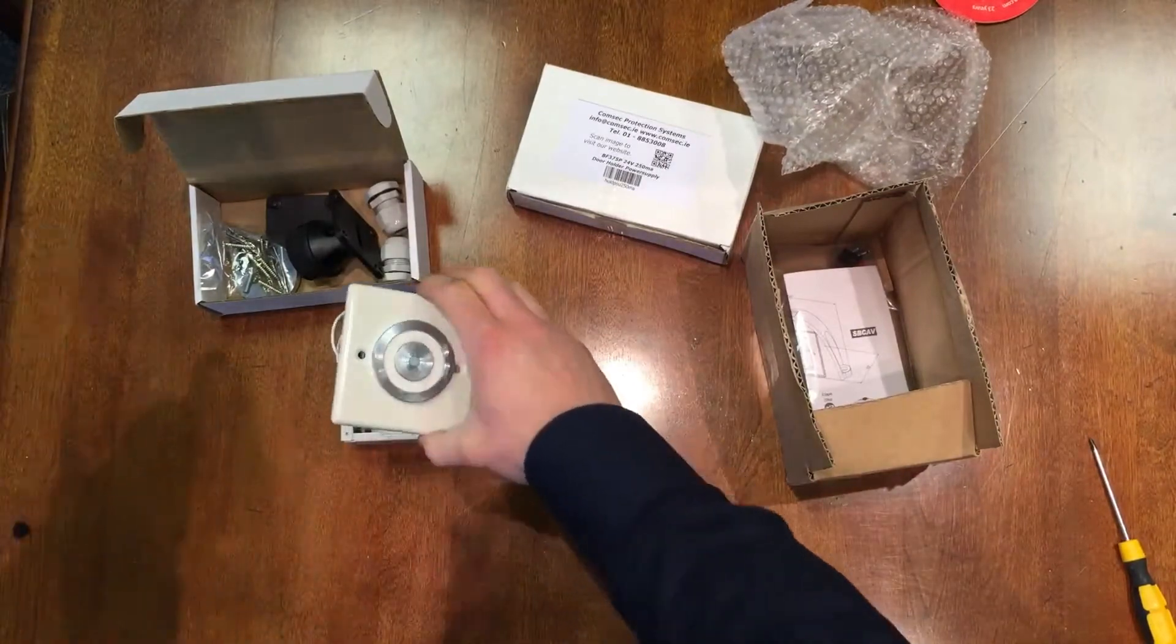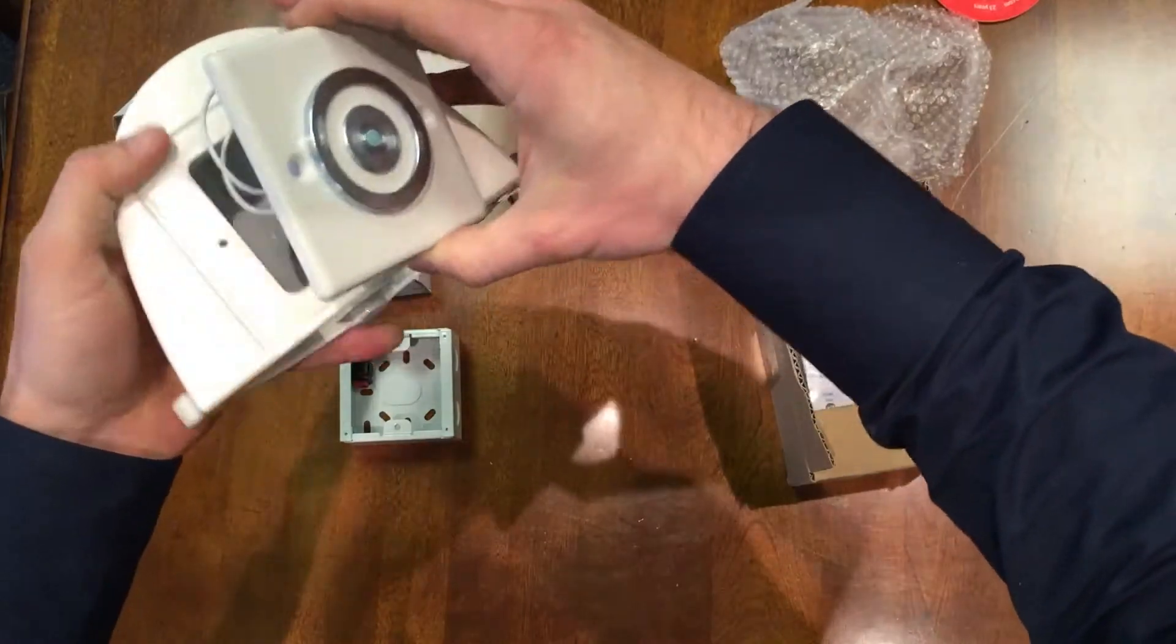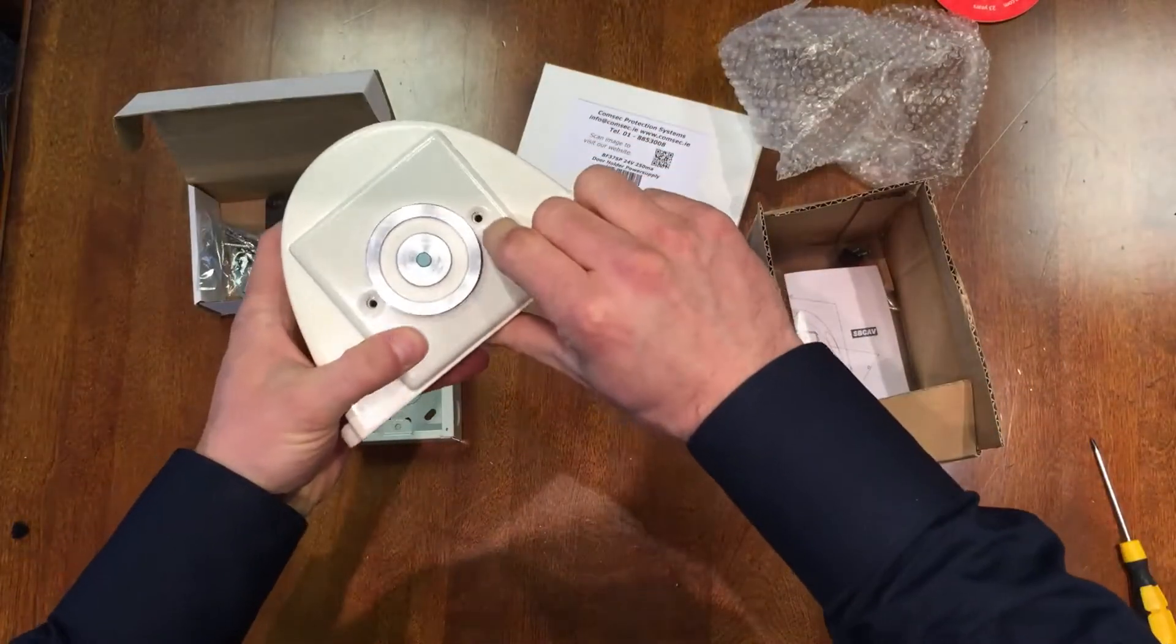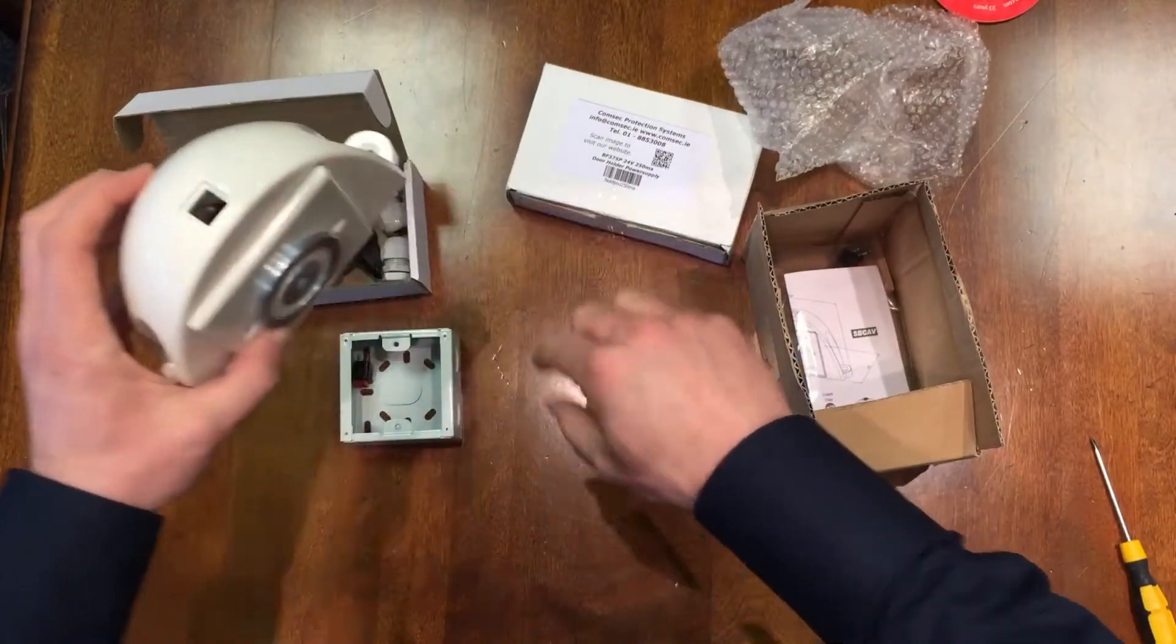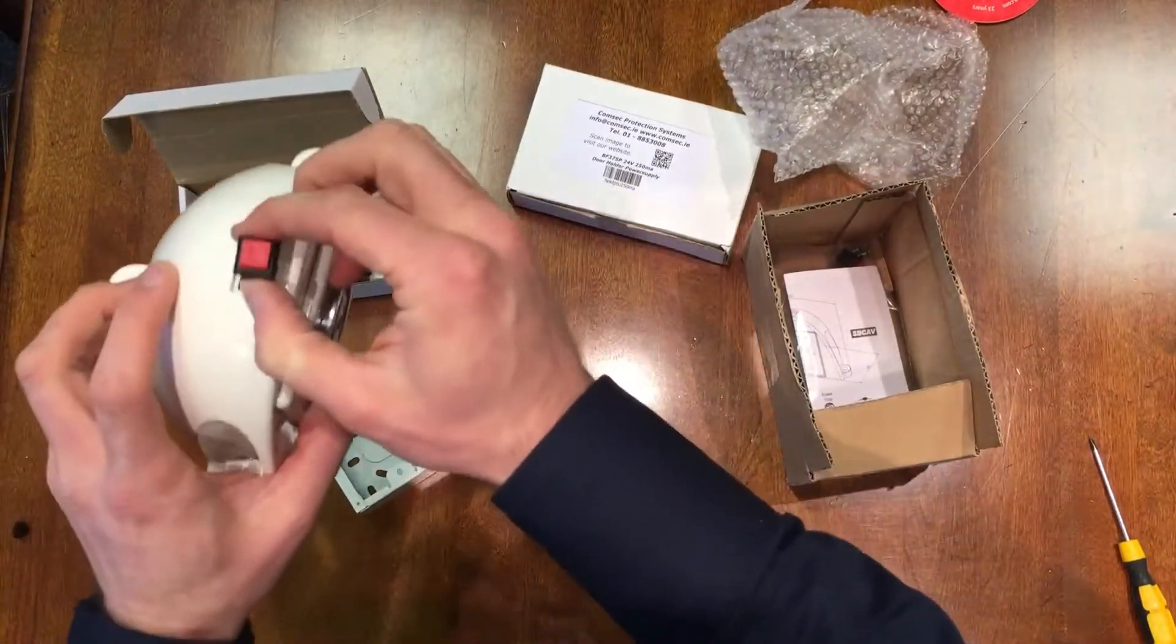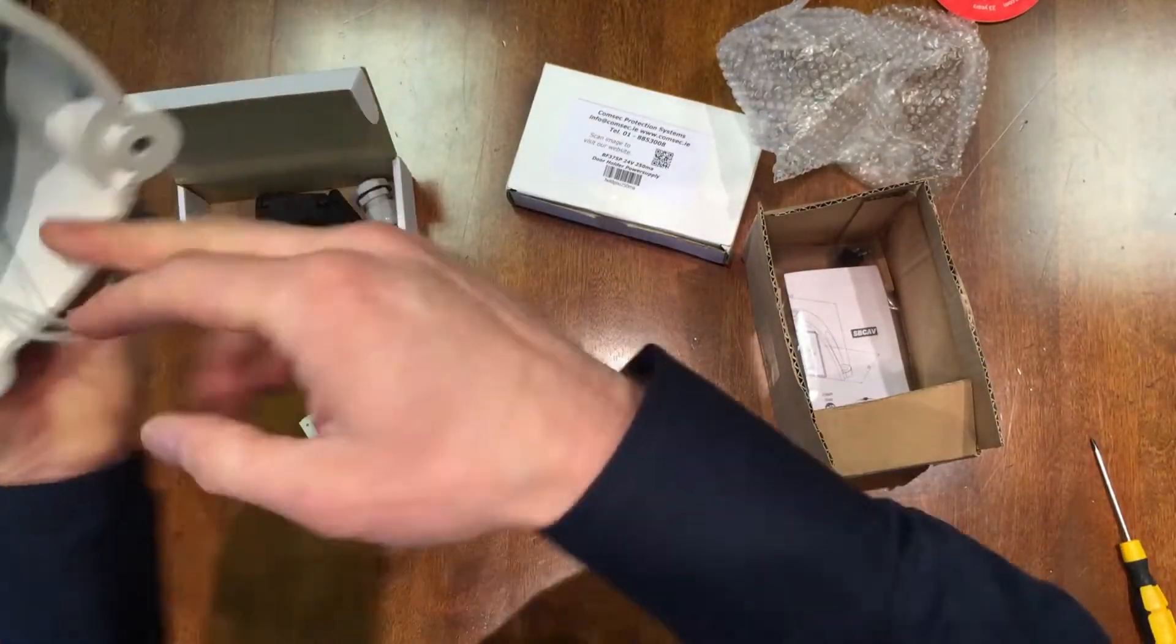You screw that to the floor with a good fixing and put your hold open device in there. All the holes line up - they're all pre-machined for you so there's no difficulty. Then your press release button gets connected in there once you have your power terminated inside.